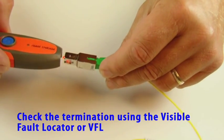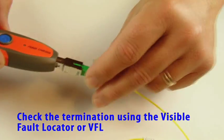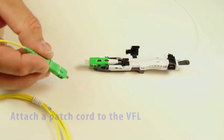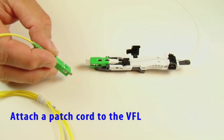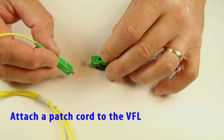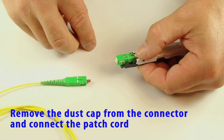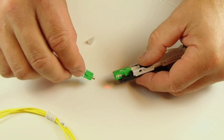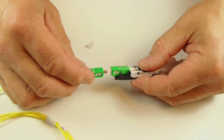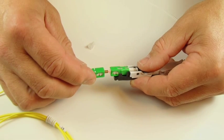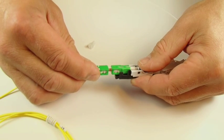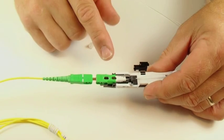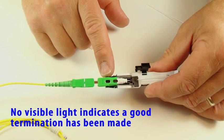Check the termination using the visible fault locator or VFL. A 3 dB attenuator is needed to reduce the power of most VFLs. Attach a patch cord to the VFL. Remove the dust cap from the connector and connect the patch cord. No visible light indicates a good termination has been made.